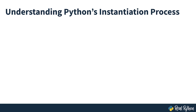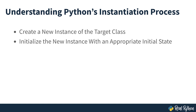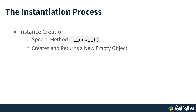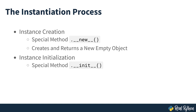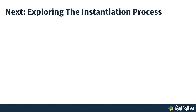You trigger Python's instantiation process whenever you call a Python class to create a new instance. This process runs through two separate steps: first, create the new instance of the target class, and second, initialize the new instance with an appropriate initial state. To run the first step, Python classes have a special method called __new__, which is responsible for creating and returning a new empty object. Then __init__ takes the resulting object along with the class constructor's arguments. The __init__ method takes the new object as its first argument, self, and then sets any required instance attributes to a valid state using the arguments passed to it.